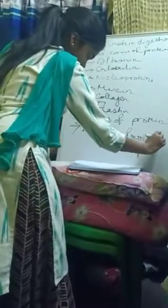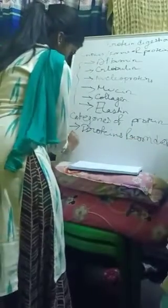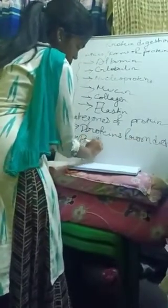In our body, these proteins are digested under the influence of different enzymes. The next portion we will understand is the categories of protein found in our body. We get protein from three types of sources: protein from diet, and protein from digestive juices.